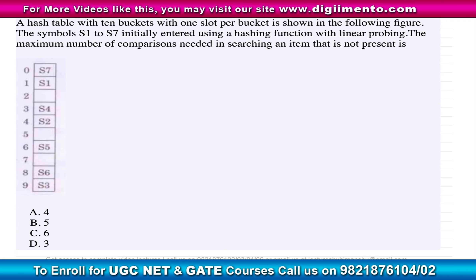In this question we have a hash table with 10 buckets, with one slot per bucket, giving 10 slots total. The symbols S1 to S7 were initially entered using a hashing function with linear probing.